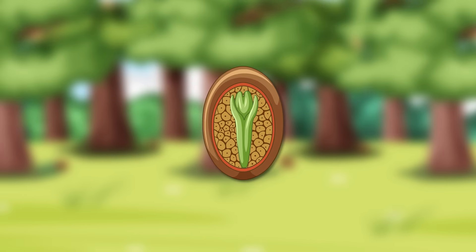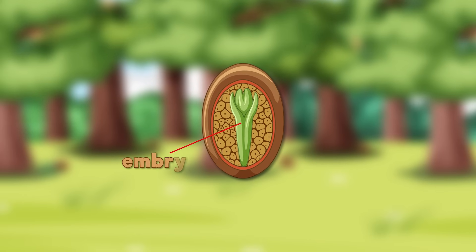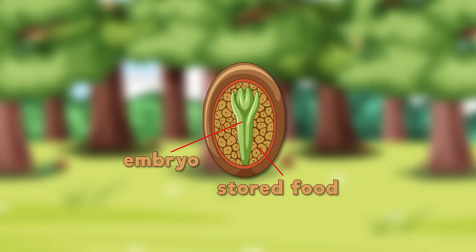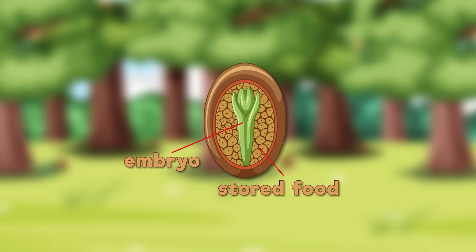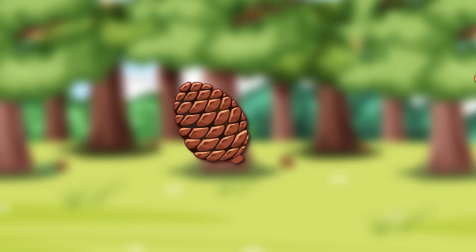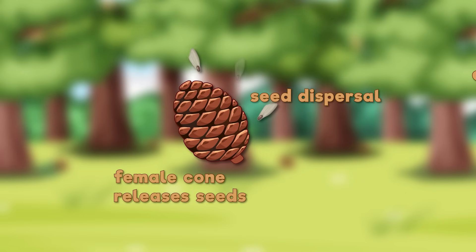After fertilization, which is the joining of the sperm and egg, an embryo begins to develop inside a seed, which is packed with stored food to help it grow. When the seed is ready, the female cone dries out and opens, releasing the seeds into the wind.